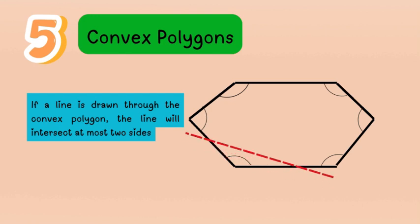To review: in a convex polygon, no vertex angle exceeds 180 degrees, and any line drawn through it will intersect at most two sides.